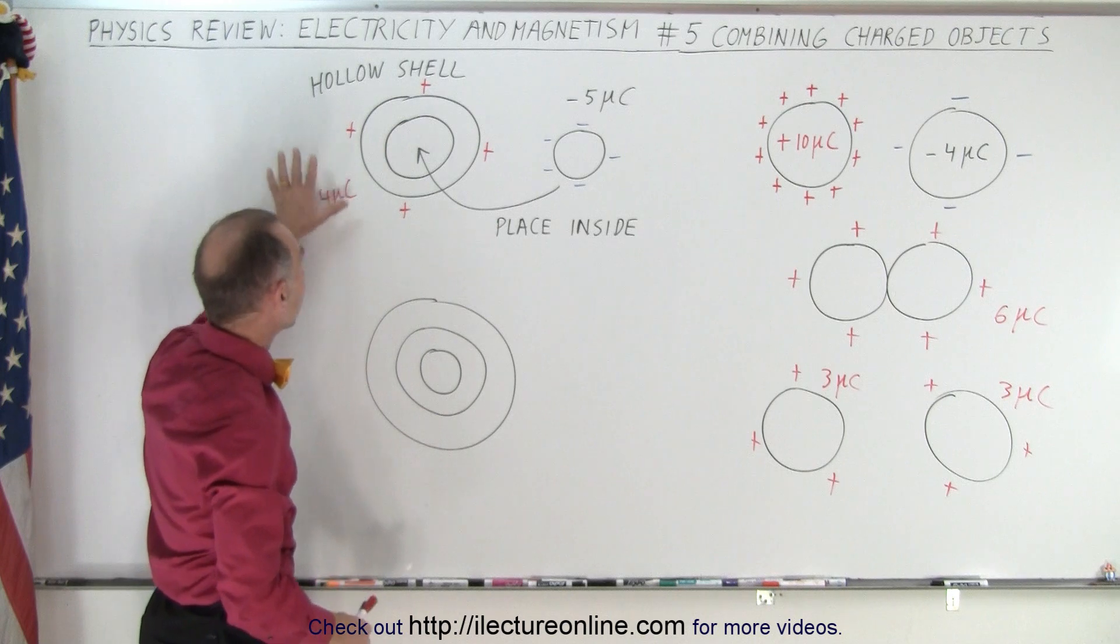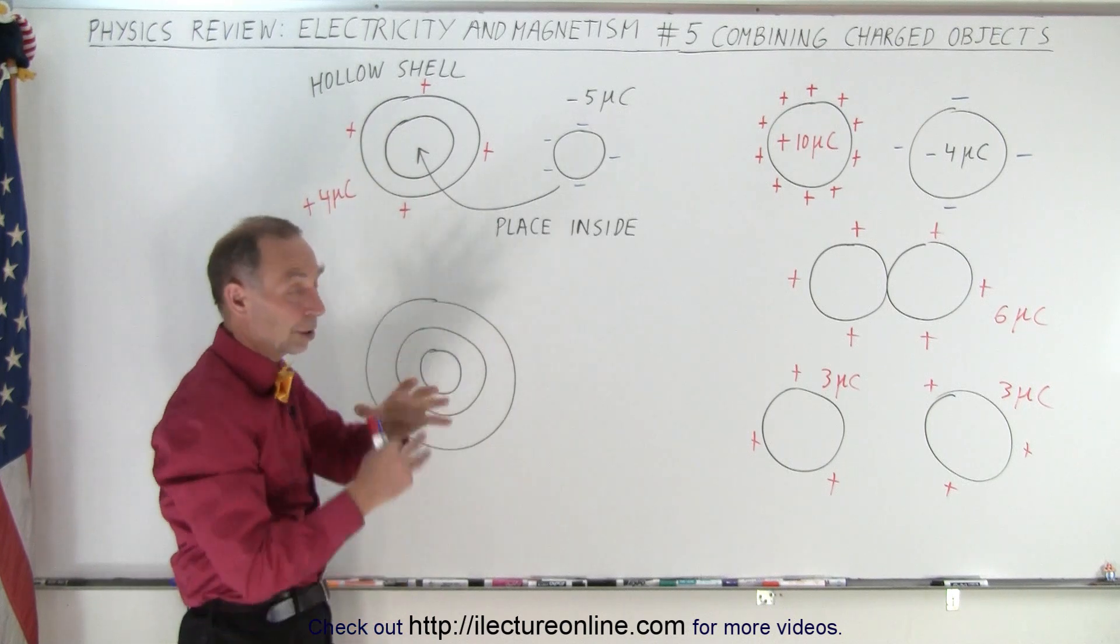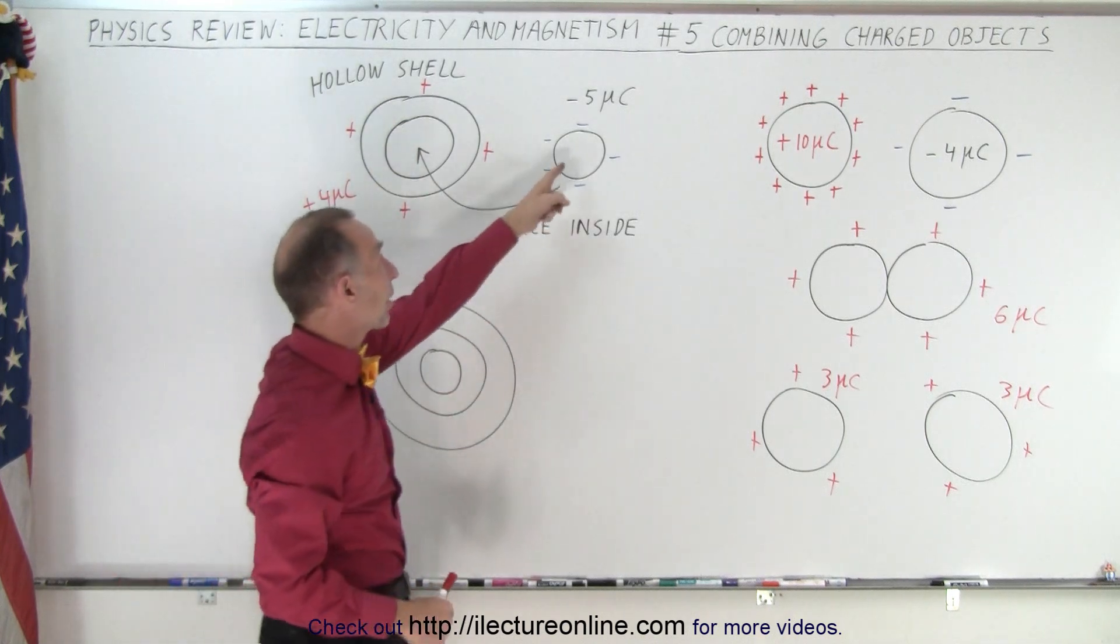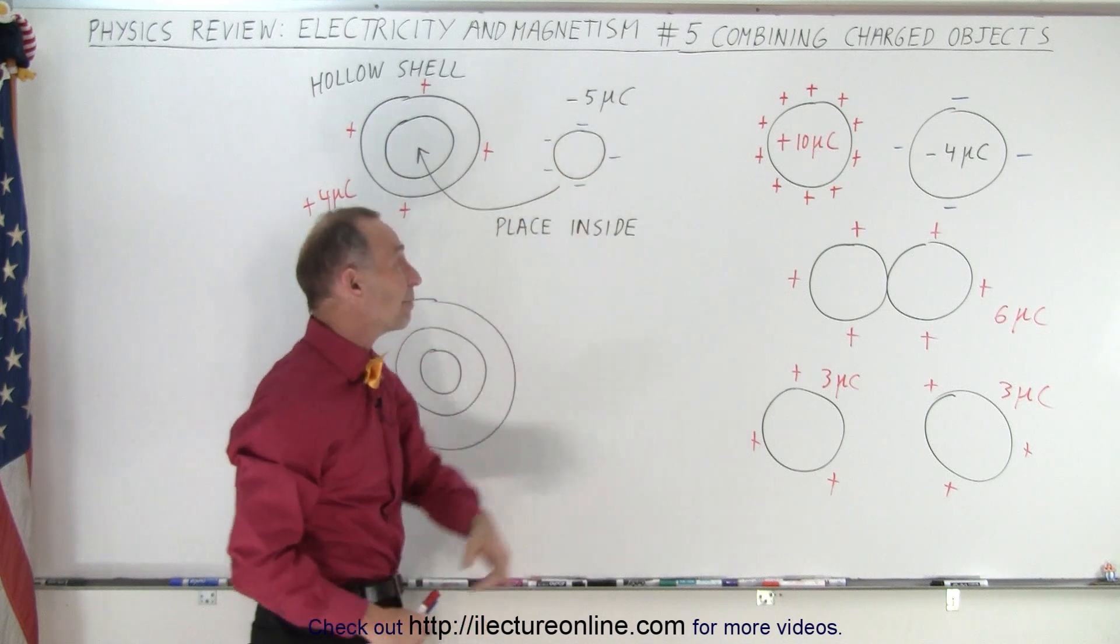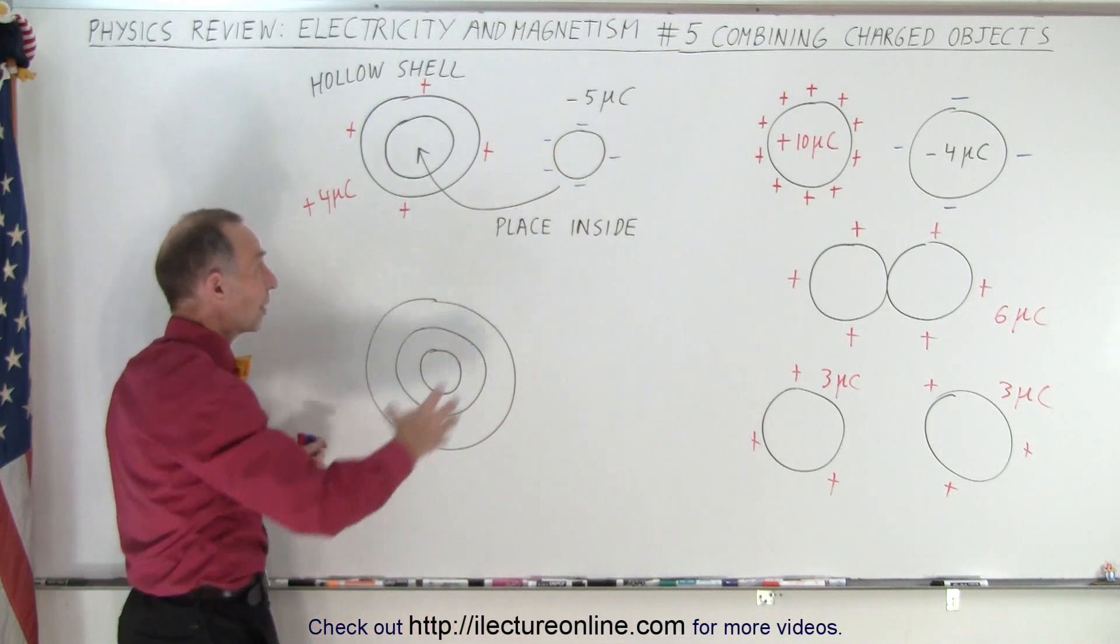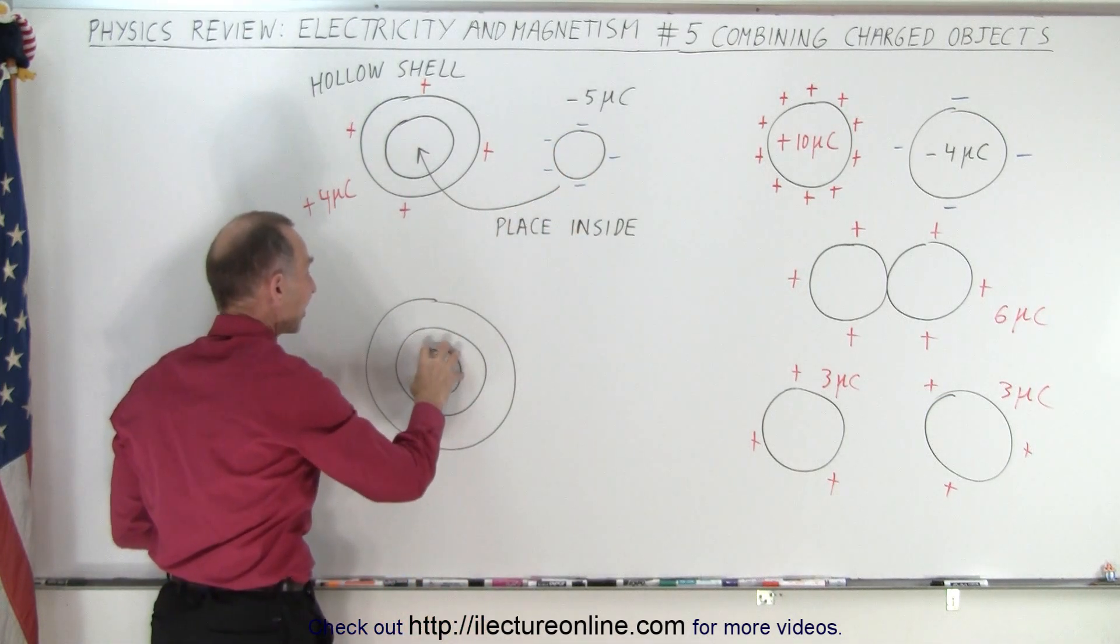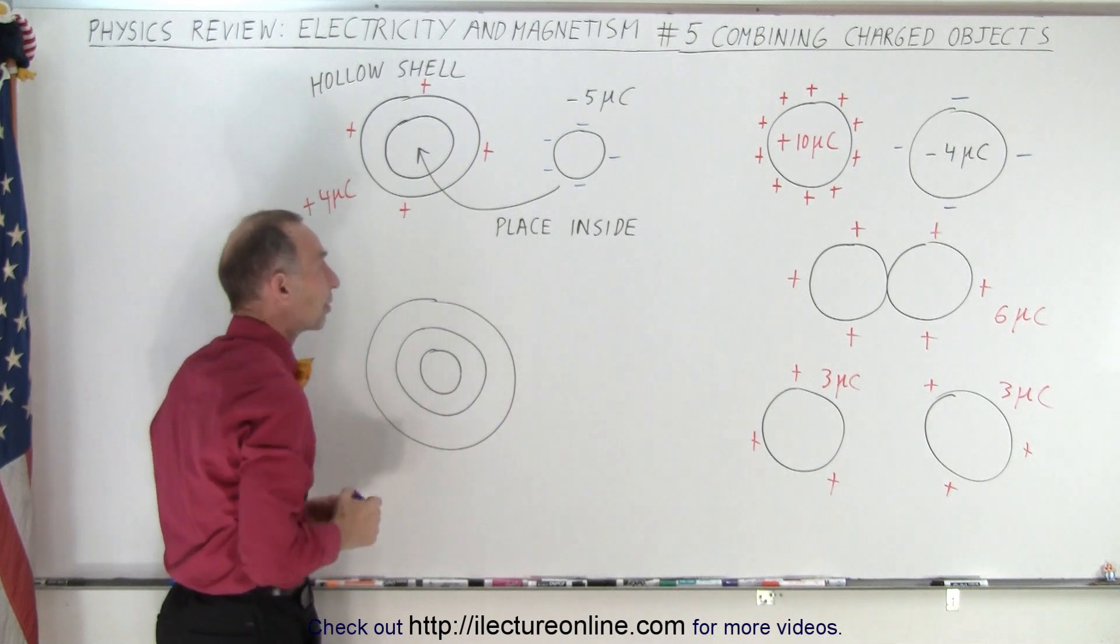Now this object has an excess of four micro coulombs and they all will reside on the surface. This object has an extra negative five micro coulombs on its surface. So now you place the small object inside the cavity of the bigger object. So what will happen?